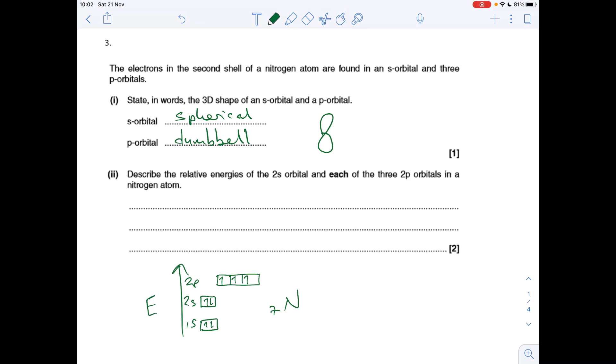We're asked to compare the relative energies of the 2s orbital and each of those 3p orbitals. You just need to say something like the 2s orbital is the lowest in energy, then 2p. But you would also need to say that the three 2p orbitals that make up the subshell all have the same energy as each other.